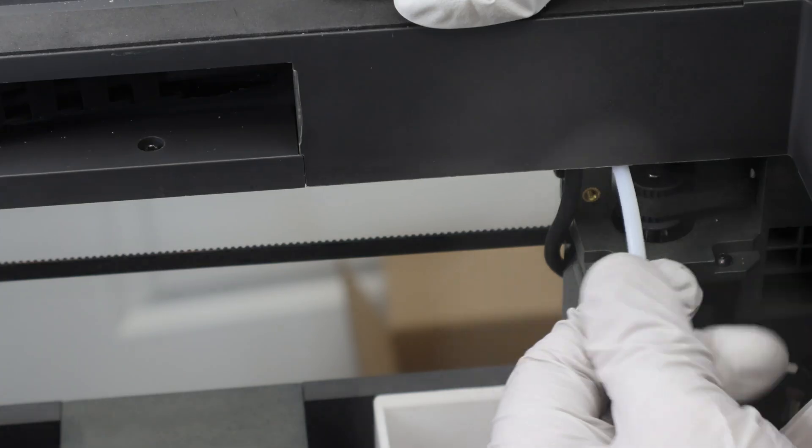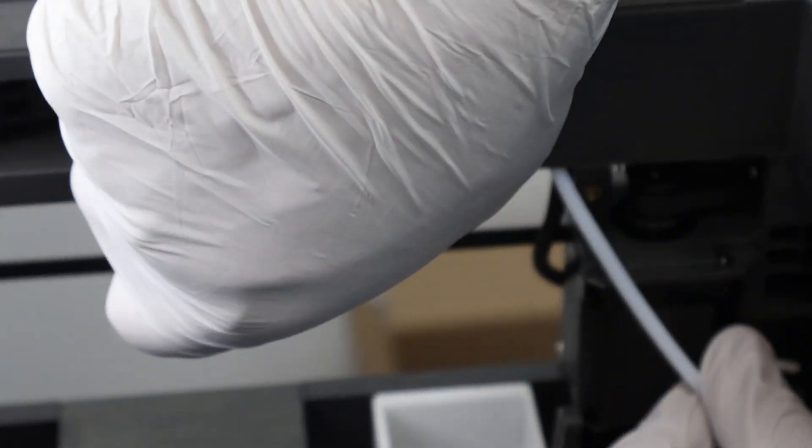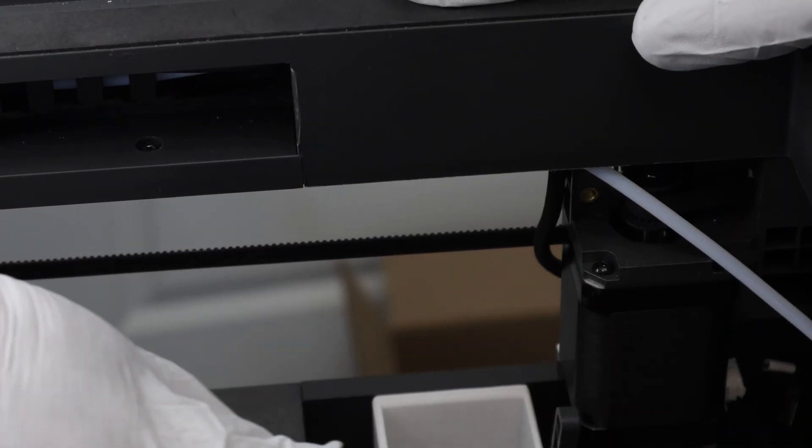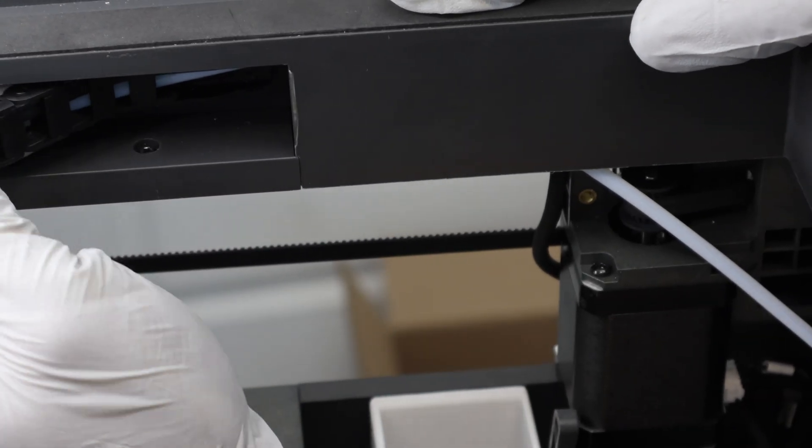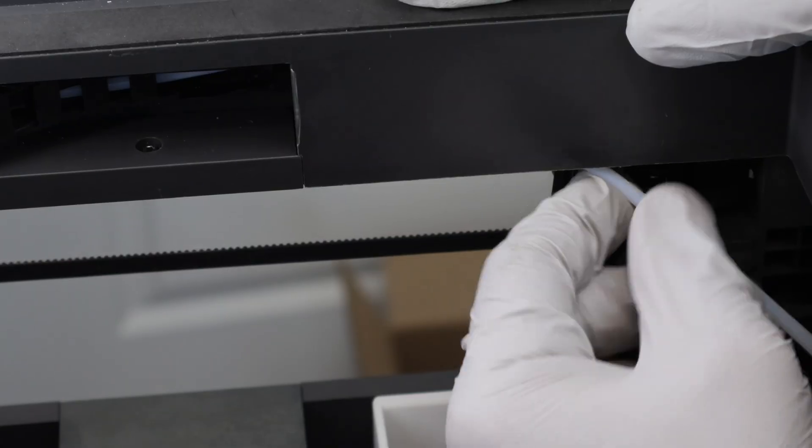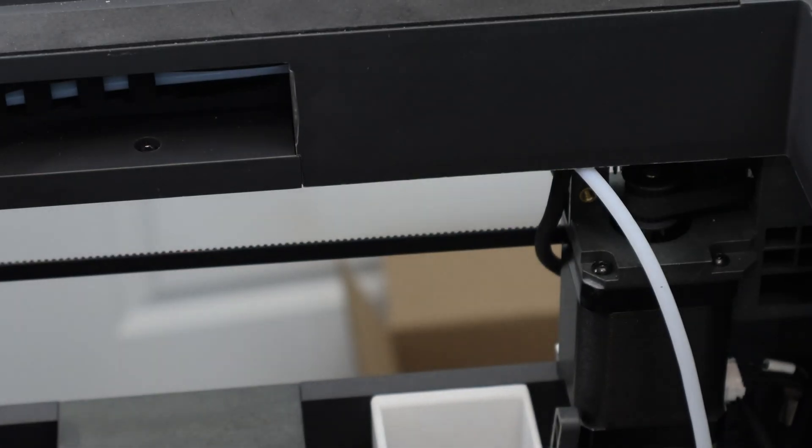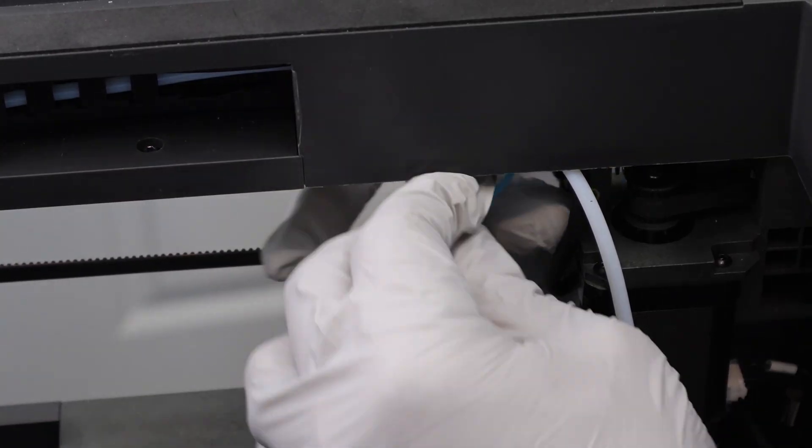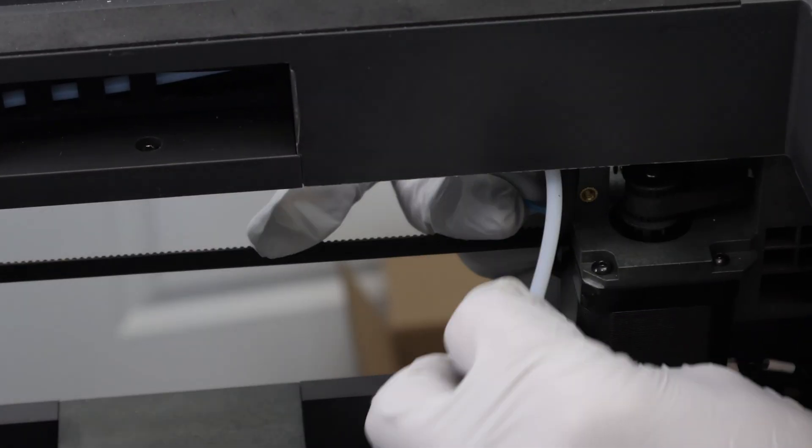Once you get it routed back up through the cable chain, leave it disconnected from the extruder head until you've worked out exactly how you want to get it routed on the other end and insert it into the sensor. But once you've done so, then you can take it and zip tie it to the extruder head cable like I'm doing here.